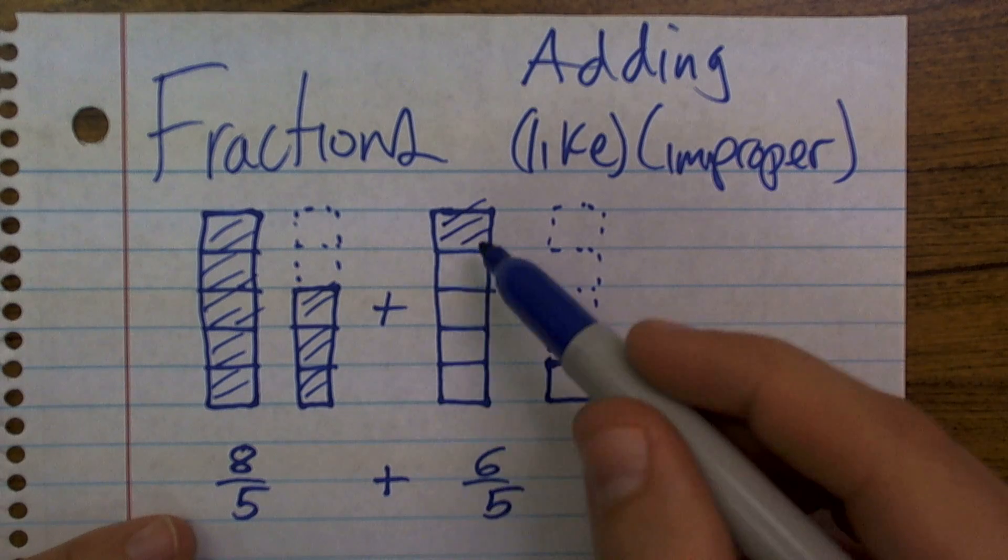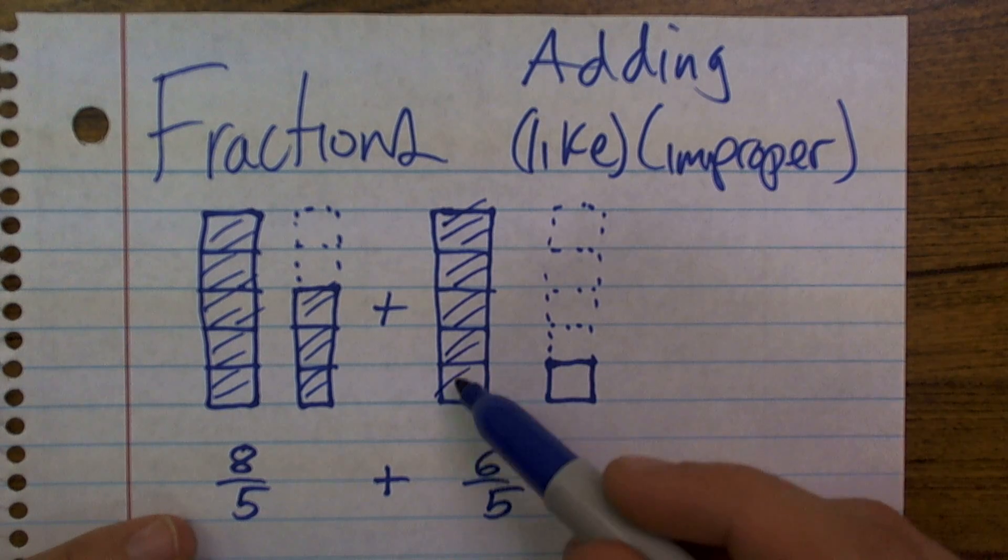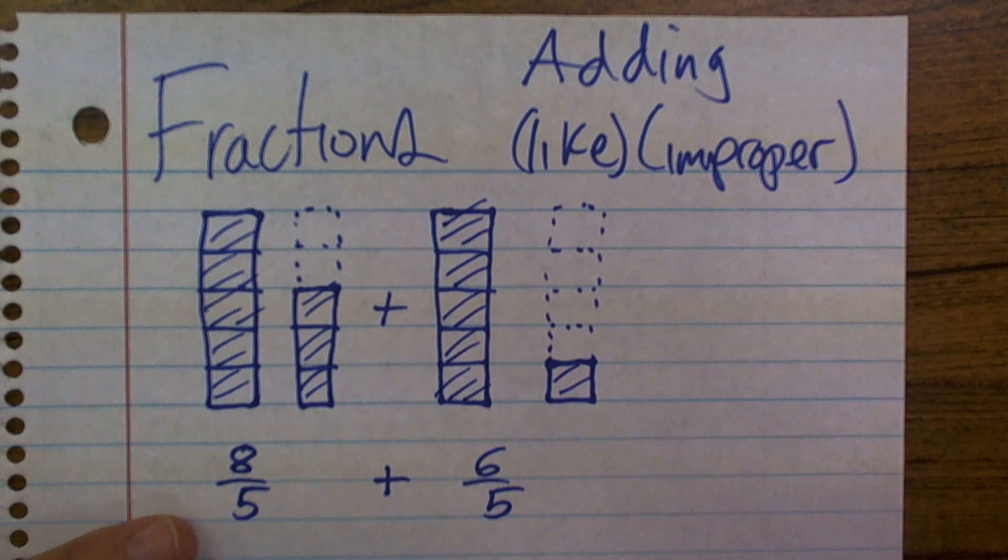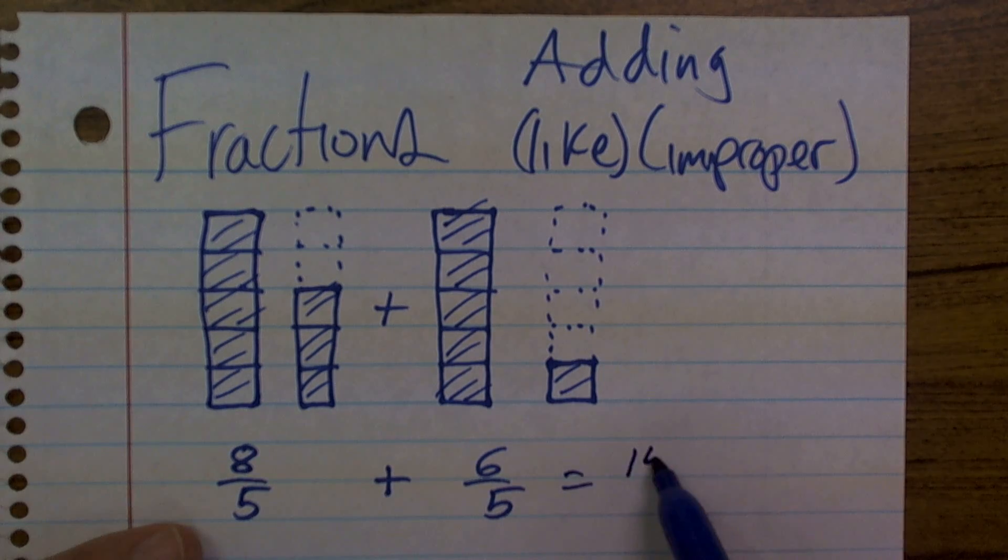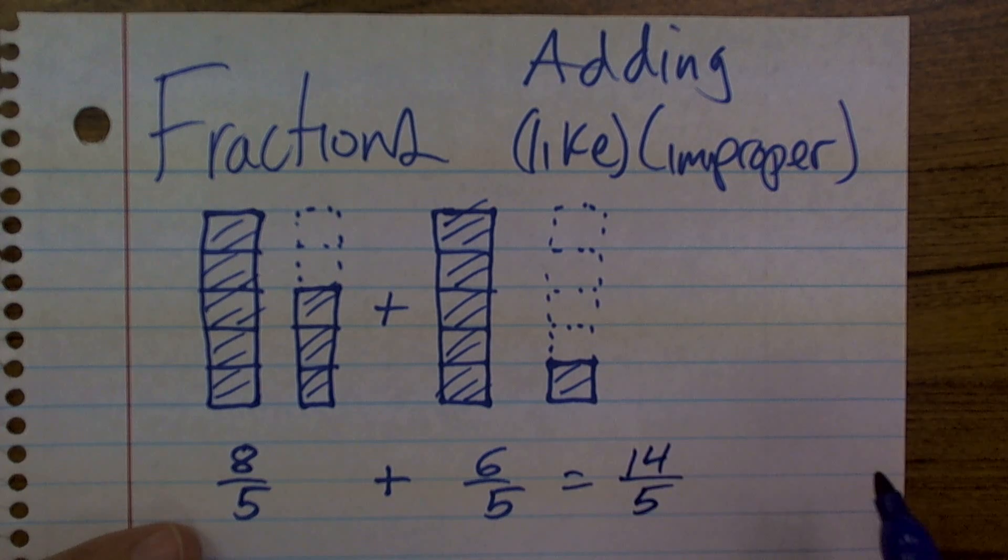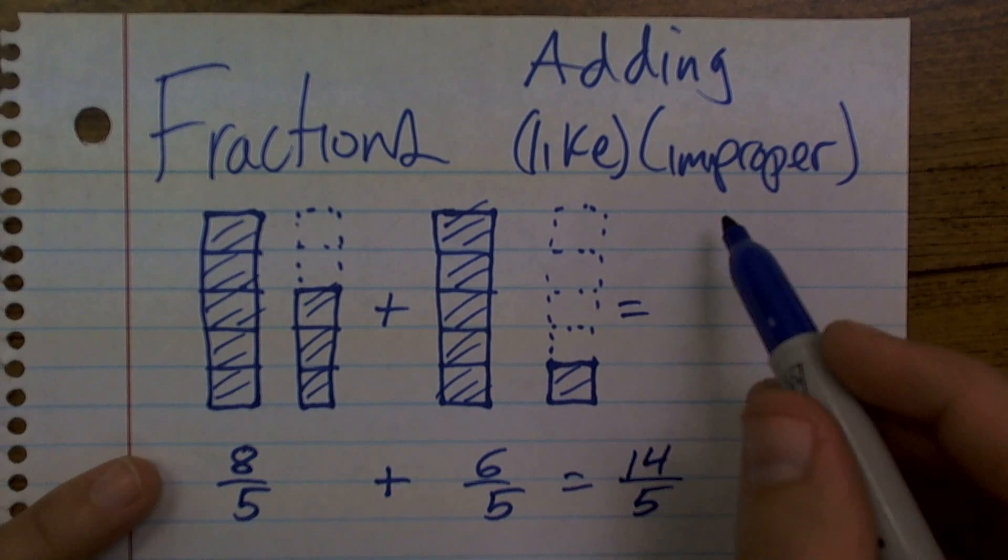If I'm going to add that to six parts, simply add your eight plus your six, which gives you 14 over 5. So if I want to represent that answer, 14 over 5...